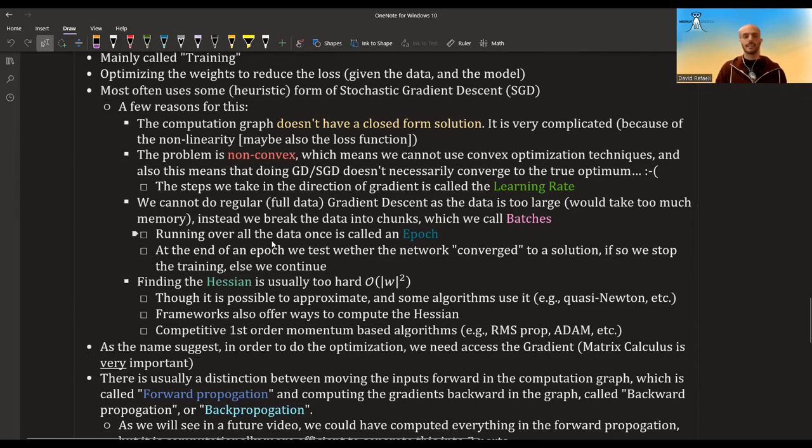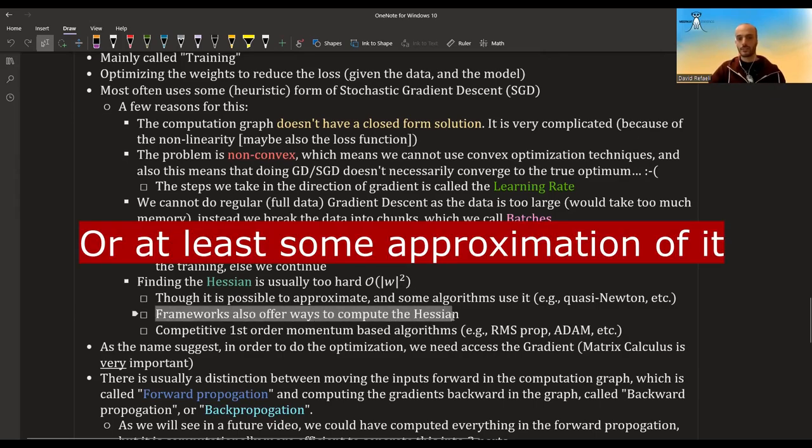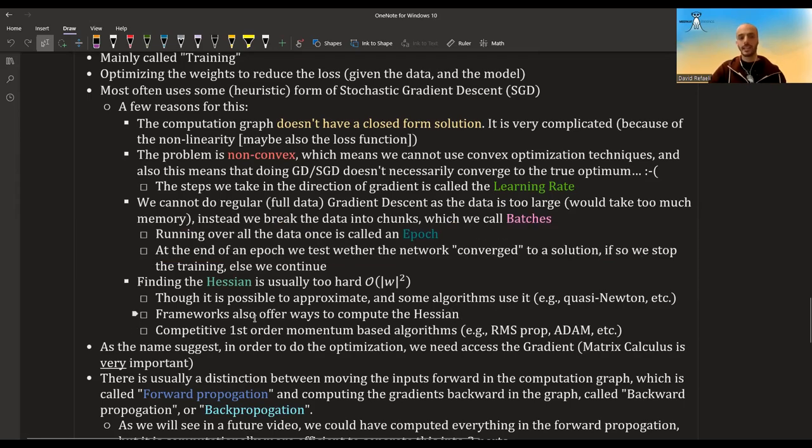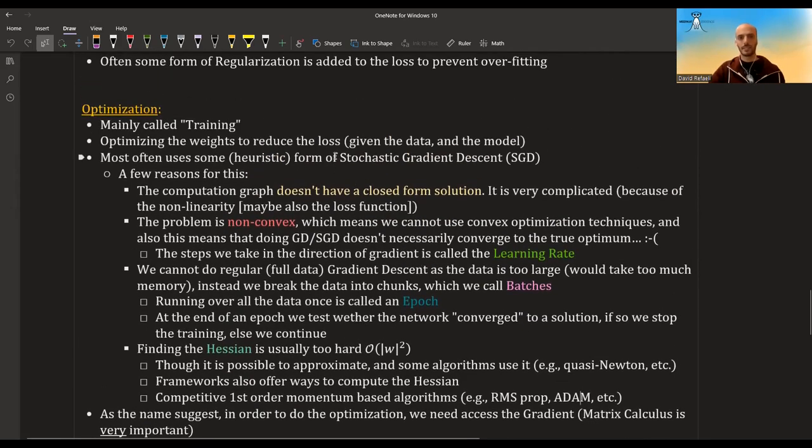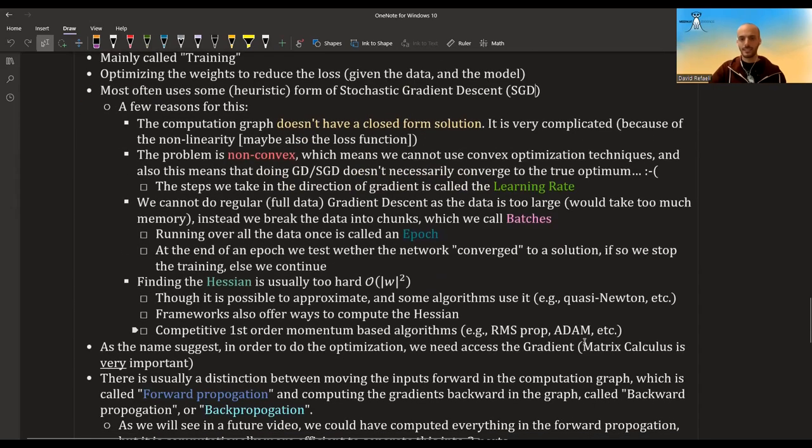Another question is why are we using gradient descent and not second order algorithms like Newton algorithm or quasi Newton algorithms? The answer is that the Hessian is usually too hard to compute. Calculating the Hessian is of order squared, the number of parameters. And in neural networks, you usually have a lot of parameters. So this is usually very hard. It is possible. I saw that frameworks also offer ways to compute the Hessian. Another reason I think that second order methods are not used is that the more advanced first order methods like RMS prop and Adam are very competitive also with the second order optimization algorithms. But you could also do second order optimization. Usually what is being done is SGD, some form of SGD with momentum, Adam or RMS prop. This is an active field of research.